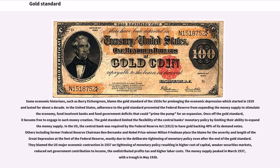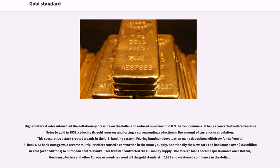Others, including former Federal Reserve Chairman Ben Bernanke and Nobel Prize winner Milton Friedman, placed the blame for the severity and length of the Great Depression at the feet of the Federal Reserve, mostly due to the deliberate tightening of monetary policy even after the end of the gold standard. They blamed the U.S. major economic contraction in 1937 on tightening of monetary policy resulting in higher cost of capital, weaker securities markets, reduced net government contribution to income, the undistributed profits tax, and higher labor costs. The money supply peaked in March 1937, with the trough in May 1938.